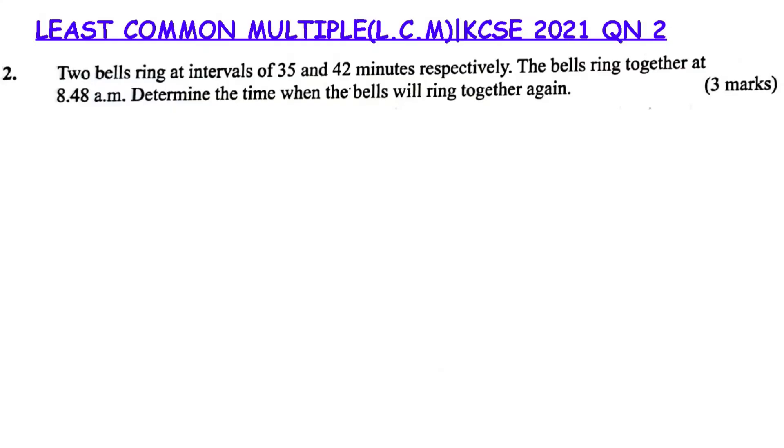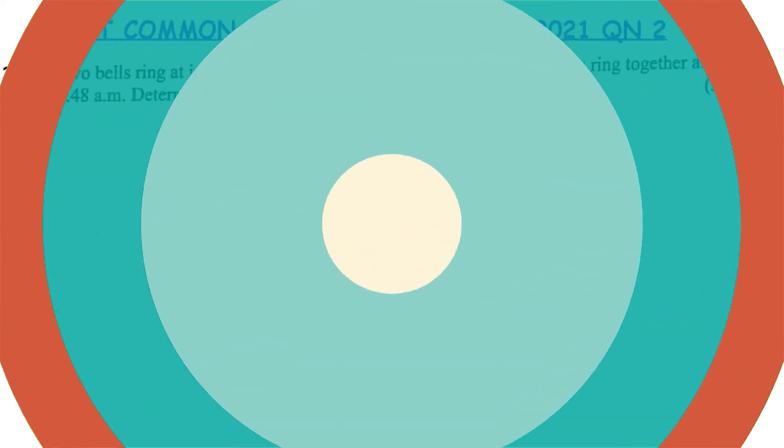Two bells ring at intervals of 35 and 42 minutes respectively. The bells ring together at 8:48 a.m. Determine the time when the bells will ring together again. Three marks.